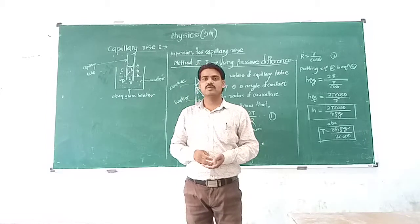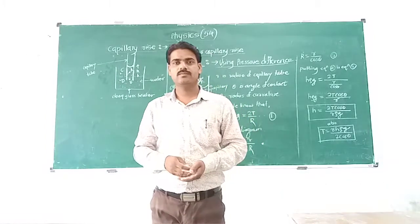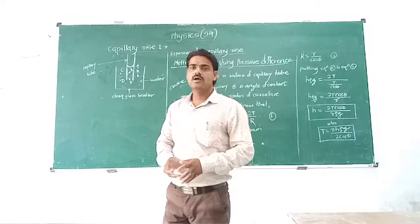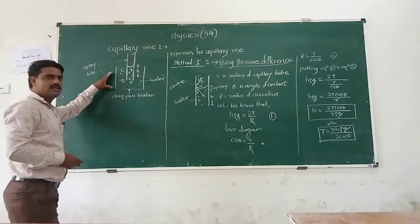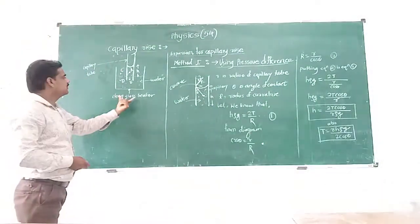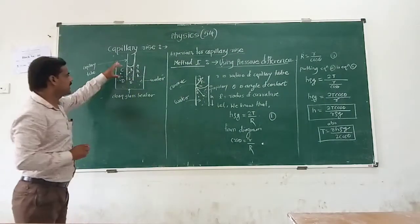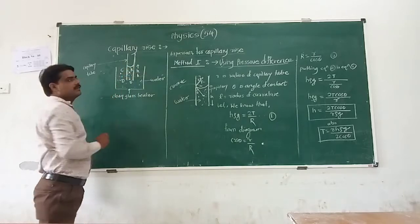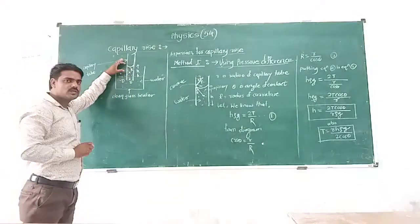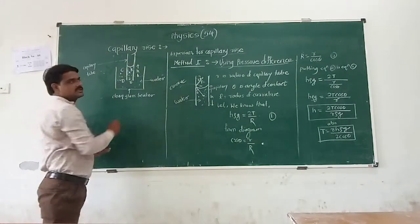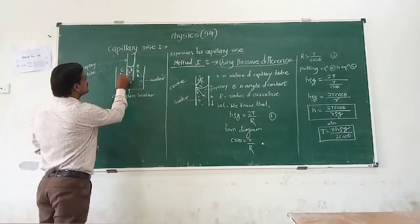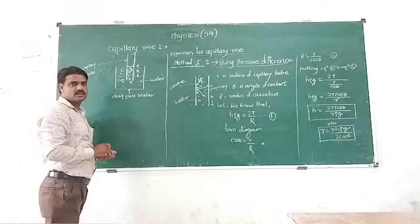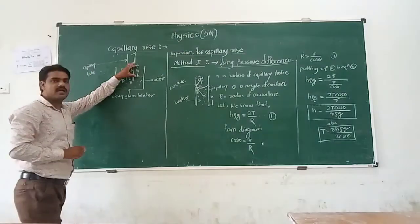Good morning students. We have to take the concept of capillary rise. A common examination question is to obtain an expression for capillary rise. In the first diagram, there is a capillary and a glass beaker with water. The capillary is dipped vertically in the beaker, and water rises in the capillary as water sticks to the glass, forming a concave meniscus. The liquid rises to a height h, so h is the height of the liquid column.